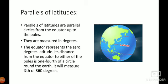The equator represents the zero degree latitude. The distance from the equator to either of the poles is one-fourth of a circle around the earth. It will measure one-fourth of 360 degrees which is equal to 90 degrees.